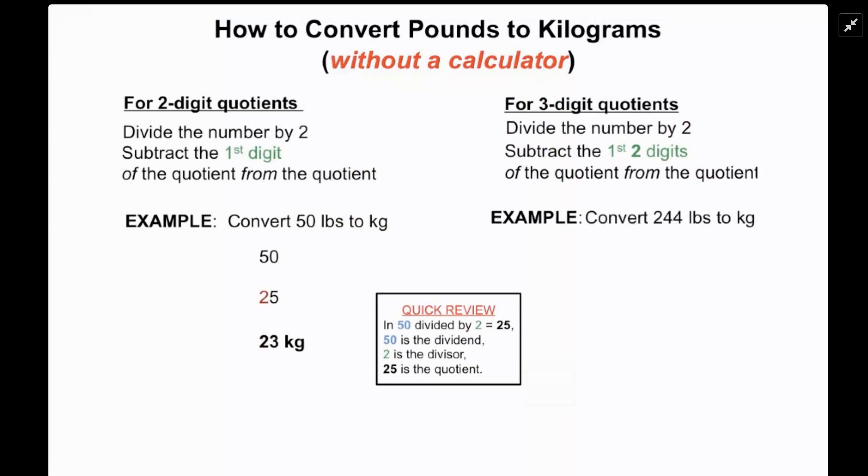We would first divide this number in half and we get 122. Now we're going to subtract the first two digits of this quotient from itself.